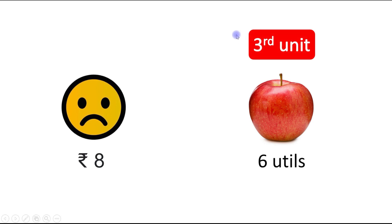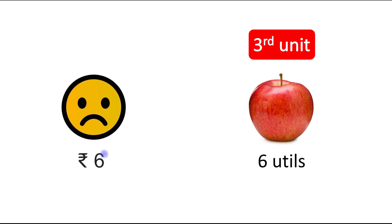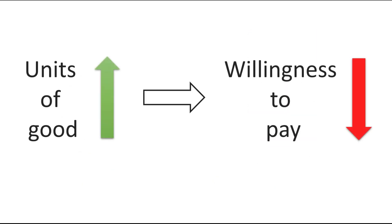When the consumer consumes the third unit of apple, he gets a satisfaction of 6 utils. Will he still be ready to pay rupees 10 or 8? Obviously not, because he is getting a lesser satisfaction, so he will pay rupees 6. The main conclusion is: as the units of a good increase, willingness to pay decreases, because the consumer is getting lesser satisfaction for each successive unit.